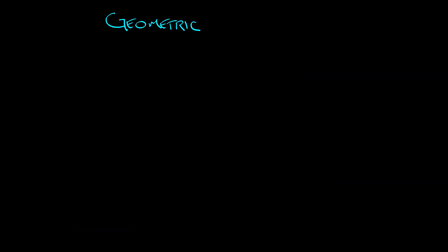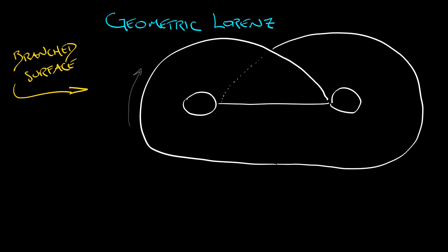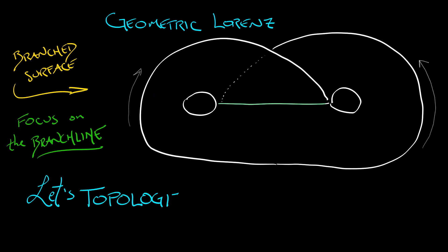So we got our geometric Lorenz attractor, which is a branched surface. It looks like this guy. And what we're going to do is we're going to focus on that branch line, that line that cuts across where these two branches fuse together. And the key step is going to be to topologize that branch line as an interval, the interval from zero to one.